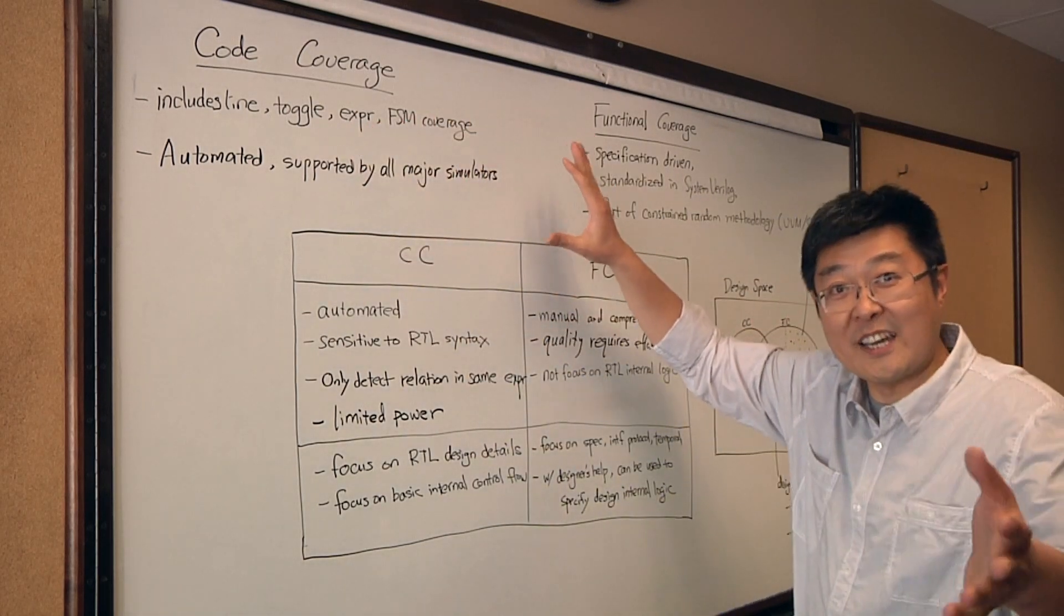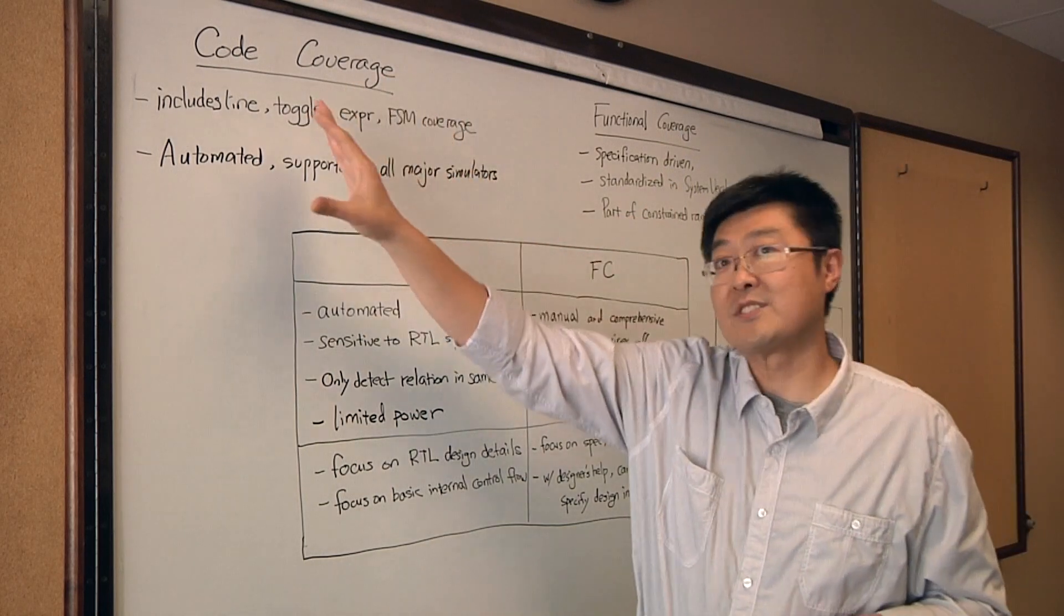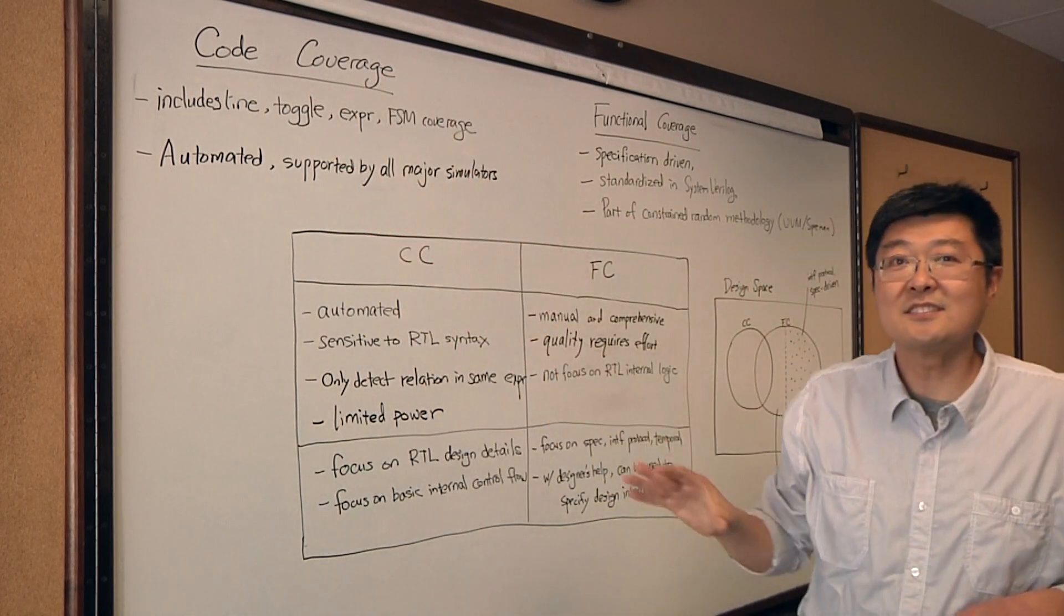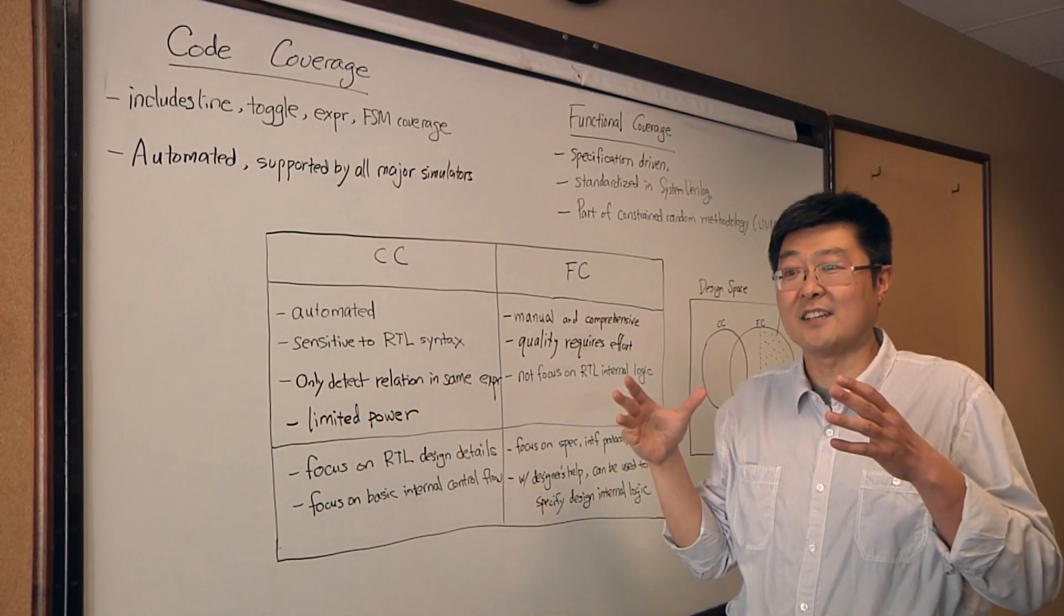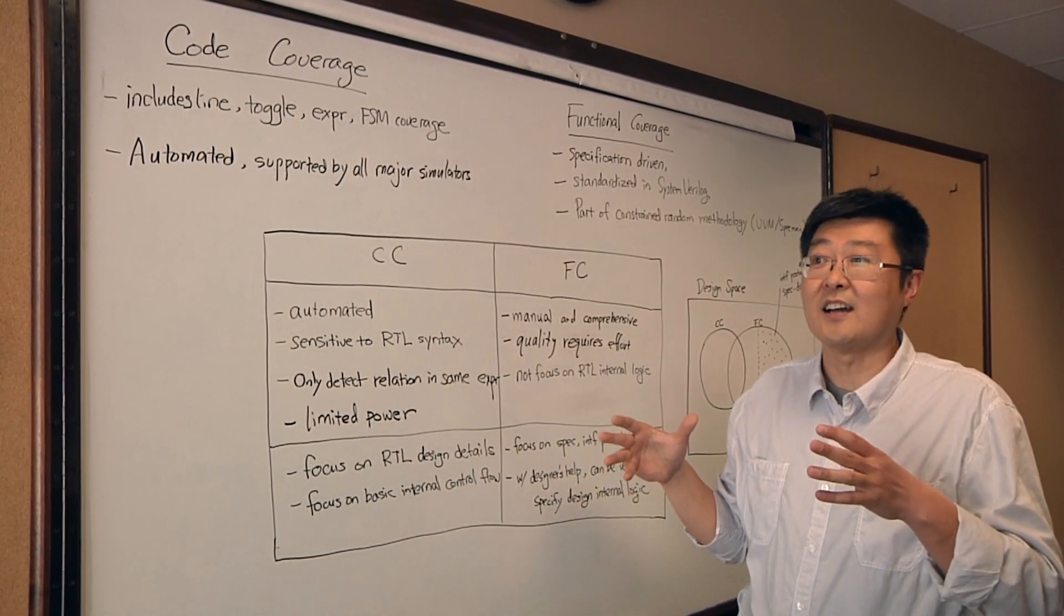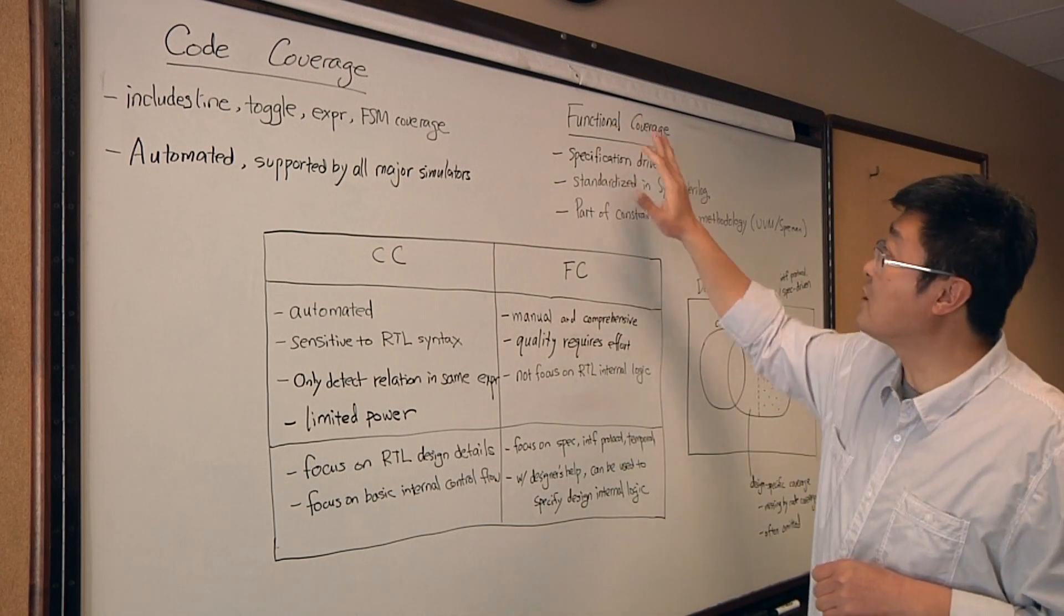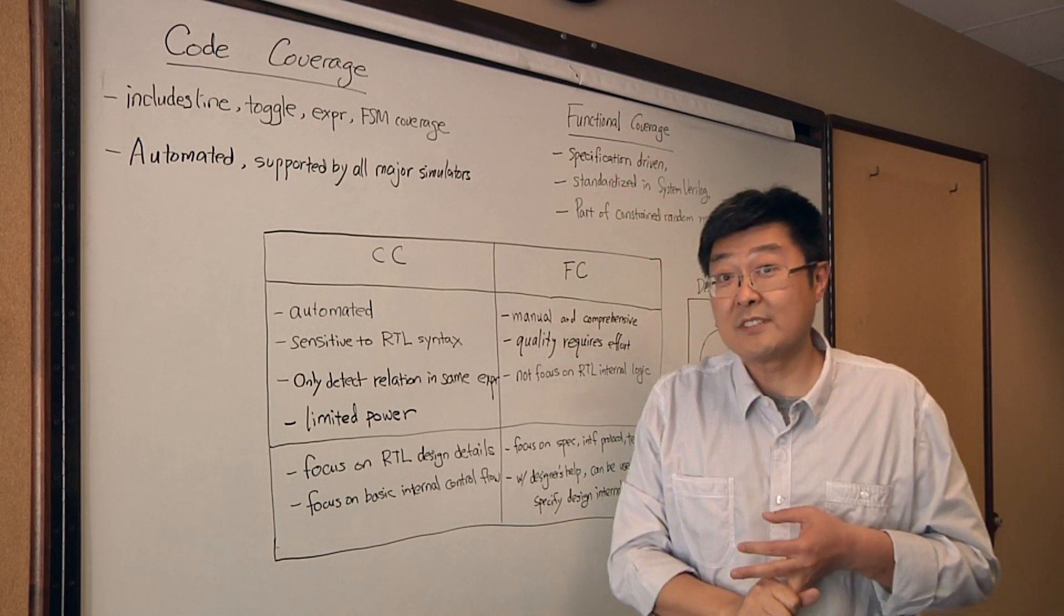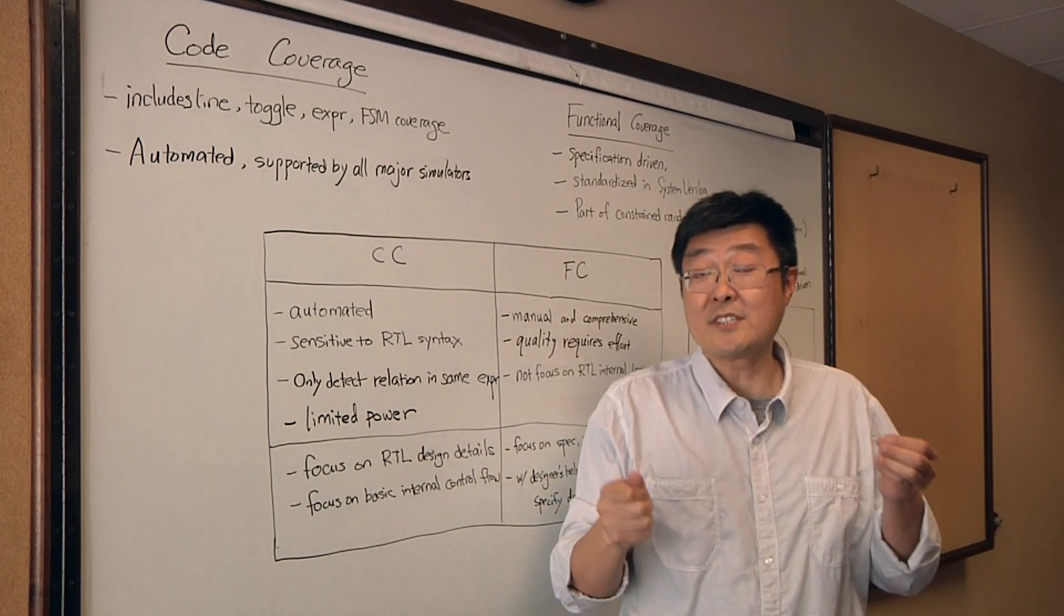So I'd like to move on to functional coverage, because code coverage is not complete. It doesn't really give us comprehensive information. In the later stage of the verification period, we start looking at functional coverage. Functional coverage is specification driven. In the verification process, early on, once the design specification is ready, people will look at the spec and manually write down those coverage codes or coverage items derived from specification.